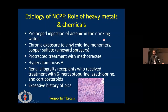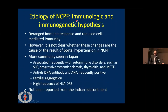Other etiological factors include heavy metals and chemicals — chronic exposure to vinyl chloride, hypervitaminosis A, and 6-mercaptopurine can lead to periportal fibrosis. An immunological or immunogenetic hypothesis involving deranged immune response has also been proposed, reported more in western countries but not well-established in the Indian subcontinent.